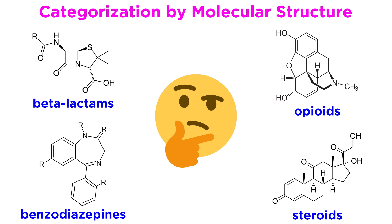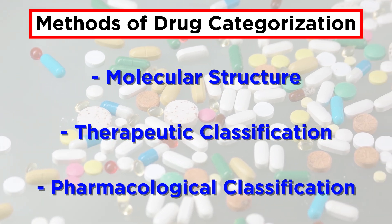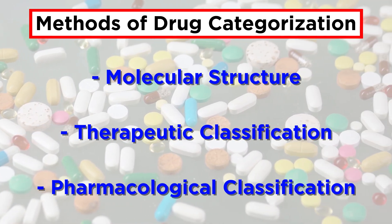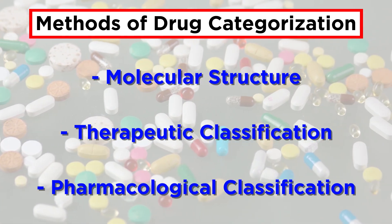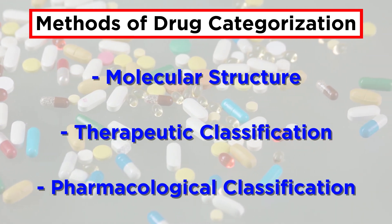As we know, drugs can be categorized by molecular structure, but they can also be categorized in the context of therapeutic classification, meaning what they treat, as well as pharmacological classification, meaning how they work. In the interest of being thorough, we will touch on all of these methods of categorization to some extent as we go, but to start out, let's get our feet wet with a class of drugs that almost everyone is familiar with in one form or another.